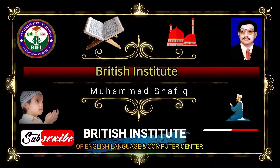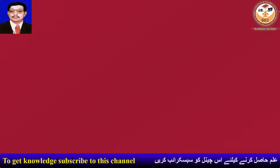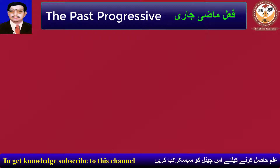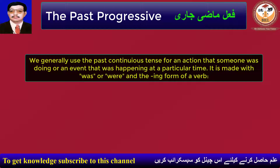Bismillahirrahmanirrahim. The Past Progressive, or the Past Continuous Tense — also called Falmazi Jari. We generally use the Past Continuous Tense for an action that someone was doing, or an event that was happening at a particular time. It is made with 'was' or 'were' and the -ing form of a verb.